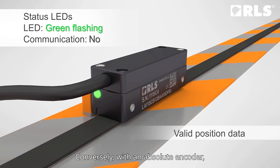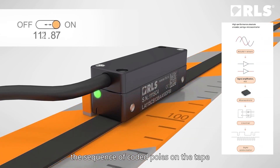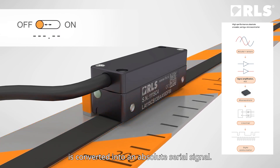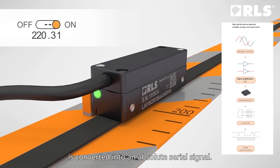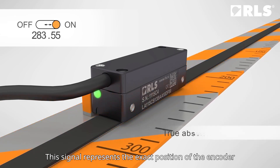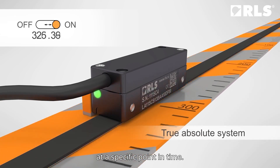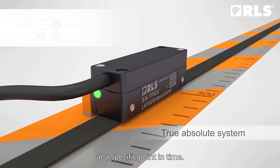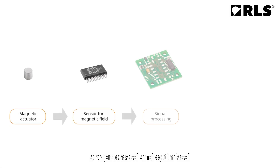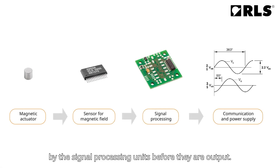Conversely, with an absolute encoder, the sequence of coded poles on the tape is converted into an absolute serial signal. This signal represents the exact position of the encoder at a specific point in time. The signals from both types of encoders are processed and optimized by the signal processing units before their output.